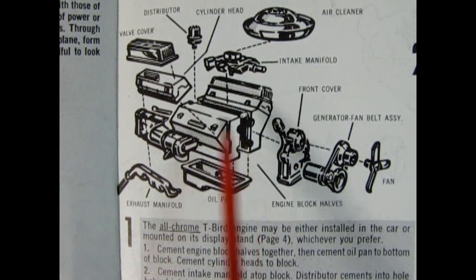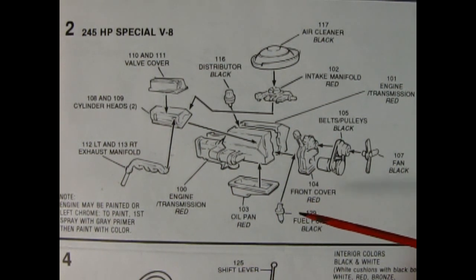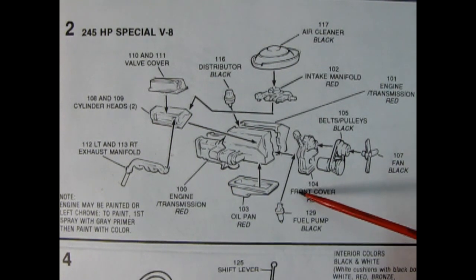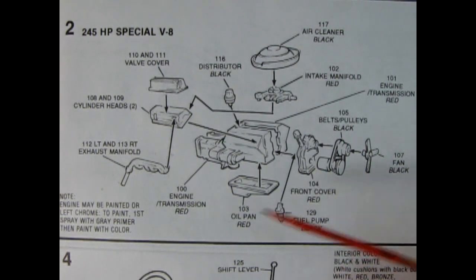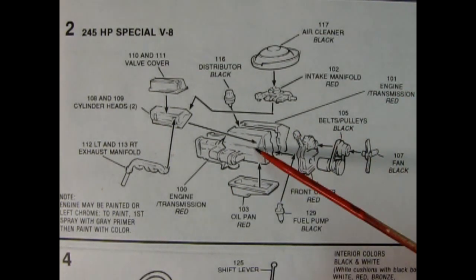Here's the instruction sheet for the 1993 release of the same car. We've got all the chrome components. One thing that's been added to this kit is this chrome fuel pump which goes up here somewhere on the front timing cover. The front cover is red, oil pan is red, the fuel pump is black, fan is black, belts and pulleys are black, as well as the generator. The engine and transmission are painted red.